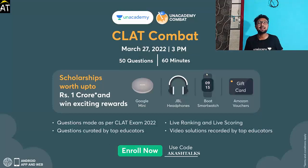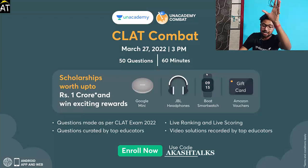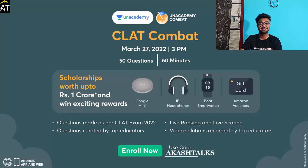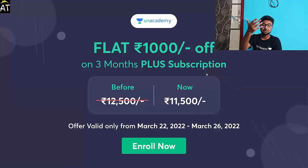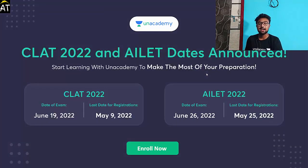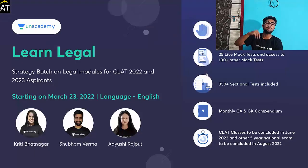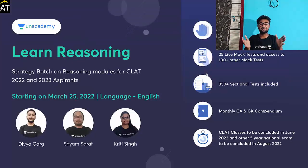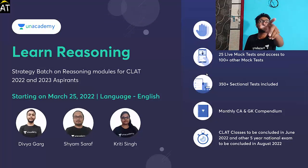I talked about the comeback earlier. If you are interested in law, there is a flat 1000 rupees discount if you enroll today. AI LAT and CLAT releases, along with 3 new batches launched by Unacademy — Legal Law, GK and Current Affairs, and Reasoning. English and Hindi classes on the 23rd and 25th. Check the description for more information.